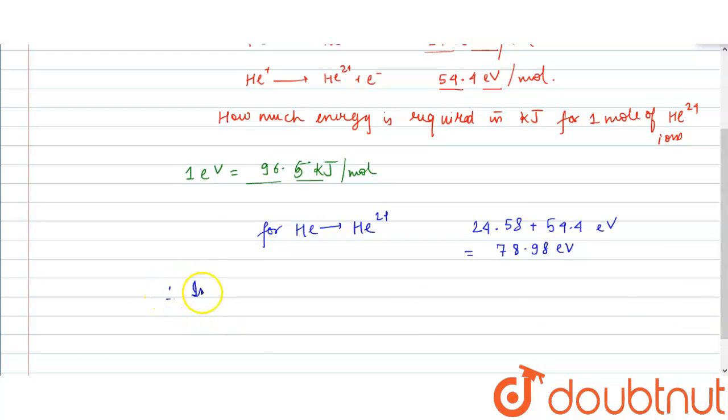Therefore, in kilojoules using this conversion we can get 78.98 into 96.5 kilojoules. This value would be 7621.51 kilojoules.